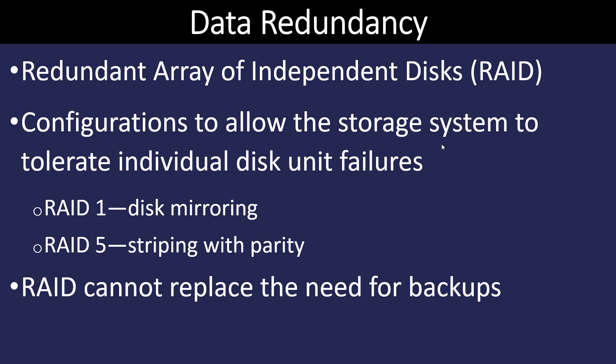A very simple RAID configuration is where we have two disks and they're mirrored — any information stored on one is instantly stored on the other. If one of the disks goes down, we can still continue forward. We can add a third disk into that scenario; the third disk becomes what they call a parity disk, which checks to make sure that the first two disks are identical.